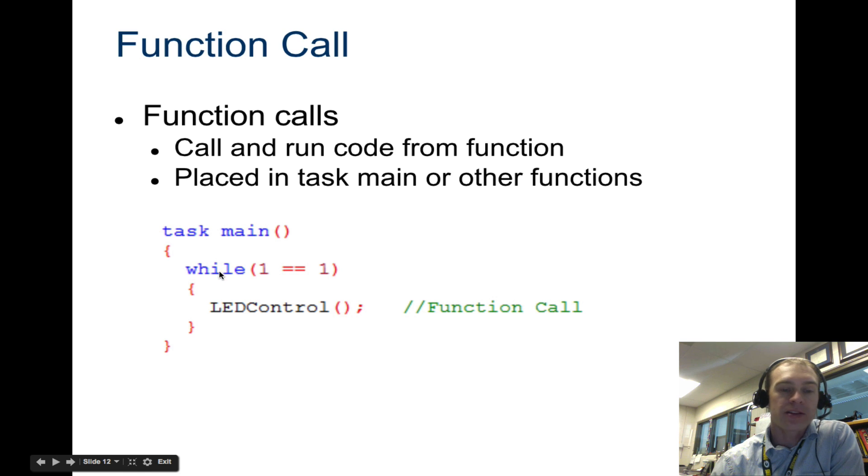And you're calling up the function inside task main. So you have your task main, and since we want to loop this so it runs this function forever, if you only want to run it once, you wouldn't do a while one is one loop. But we want to run this function forever, so we do while one is one, LED control.